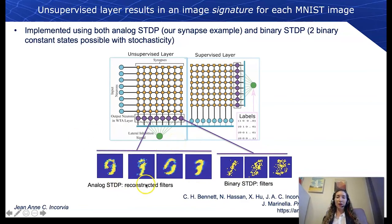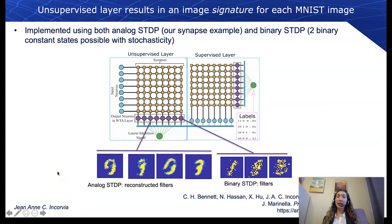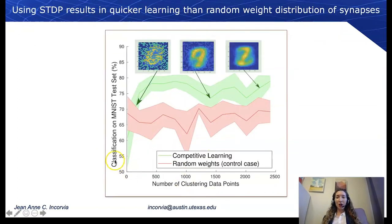It filters down the set of pixels, and in our simulation we get an output of reconstructed filter images that don't look like numbers, but they tell us information about which pixels are most important. We implemented this using analog spike-timing-dependent plasticity as our synapse example, and also binary spike-timing-dependent plasticity — where we only have two binary states — corresponding to the binary magnetic tunnel junction neural model.